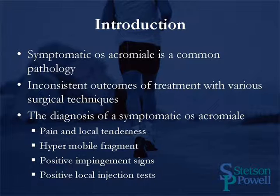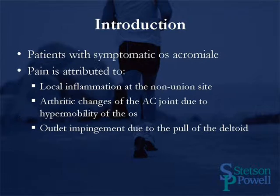A symptomatic os acromiale is a common pathology. There have been inconsistent outcomes of treatment with various surgical techniques described in literature. The diagnosis of a symptomatic os acromiale can be made by pain and local tenderness at the site, a hypermobile fragment, positive impingement signs, and positive local injection tests at the site of the os acromiale. In patients with symptomatic os acromiale, the pain is attributed to local inflammation at the nonunion site, arthritic changes of the AC joint due to hypomobility of the os, and also outlet impingement due to the pull of the deltoid on the os acromiale fragment.